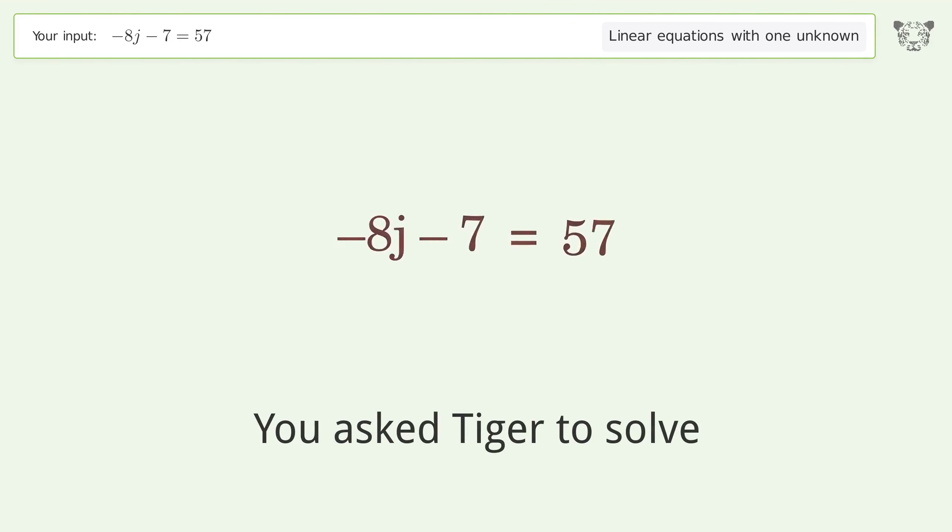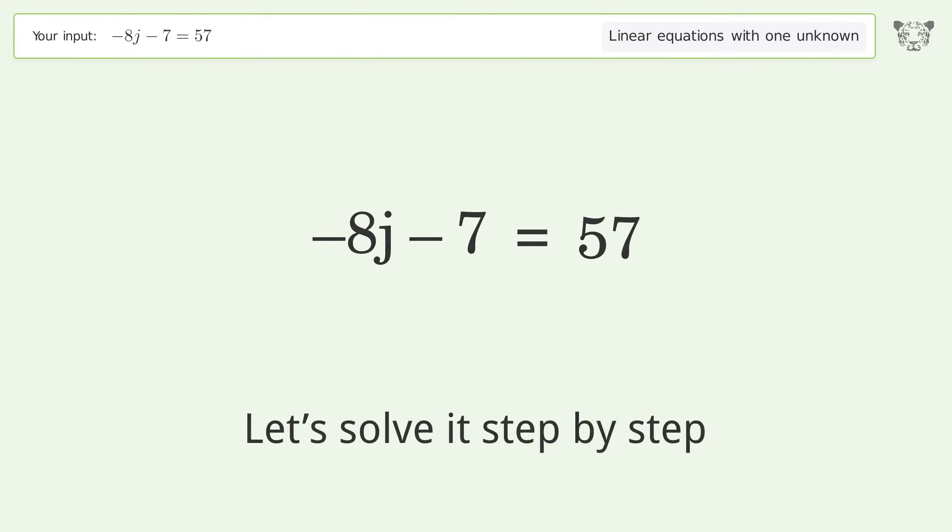You asked Tiger to solve. This deals with linear equations with one unknown. The final result is j equals negative 8. Let's solve it step by step.